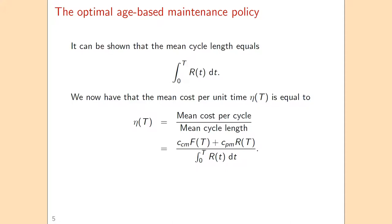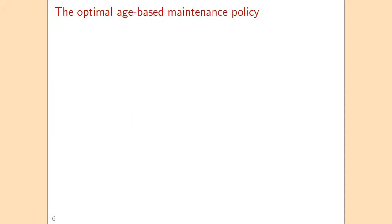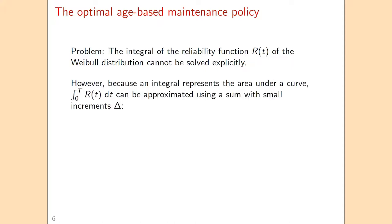If we combine the mean cost per cycle and the mean cycle length, we get the expression for the mean cost per unit of time: the mean cost per cycle divided by the mean cycle length. For a given maintenance age, this gives the mean cost per unit of time. Minimizing this function by choosing the best value for capital T gives the optimal preventive maintenance age T-opt. However, the integral of the reliability function for the Weibull distribution cannot be solved explicitly — it cannot be written in closed form — so we approximate it as a summation.